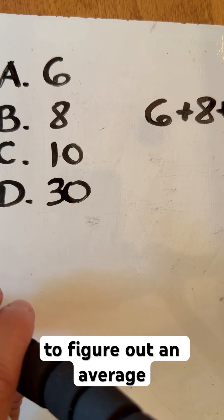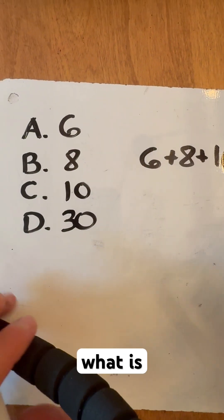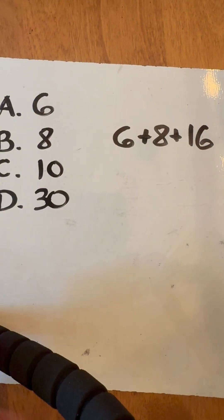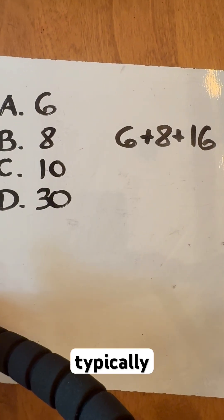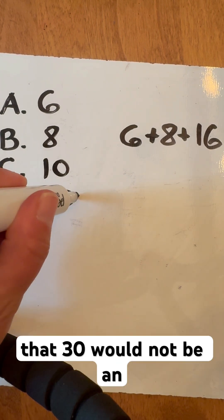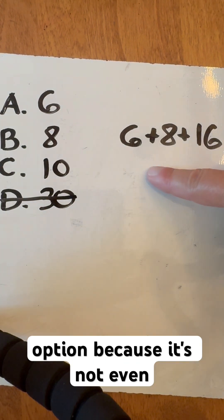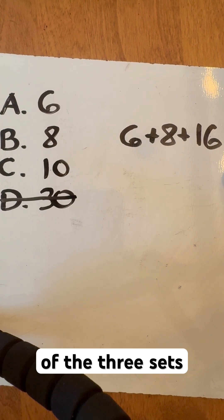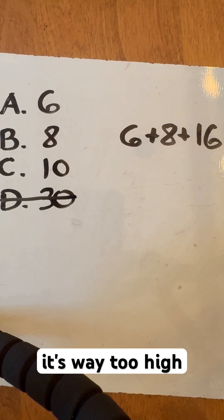Right off the bat, if I'm trying to figure out an average, averaging finds the typical or normal number. You can probably guess that 30 would not be the answer because it's not even in the realm of the three data points we have. It's way too high.